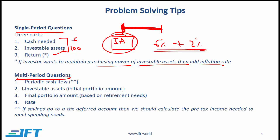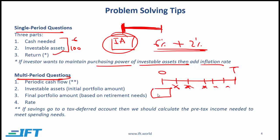With multi-period questions, there are four elements. There is time 0, time t which represents retirement, and several periods in between. We calculate periodic cash flows, there is an initial portfolio (investable assets), a final portfolio amount, and then a required rate to get from start to end given these intermediate cash flows. If every year a certain amount is saved to a tax-deferred account, you need to calculate the spending need based on a pre-tax amount.